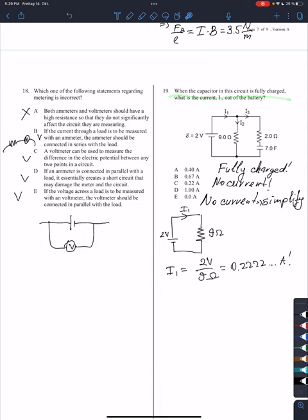So here we have a capacitor and it's fully charged. We need to find the current i1. If the capacitor is fully charged, there is no current through it. Why? Because that's what it is.